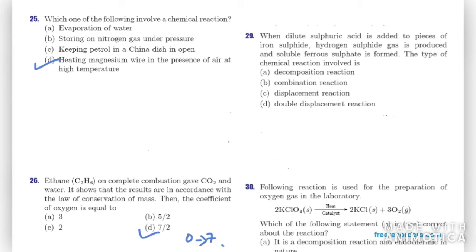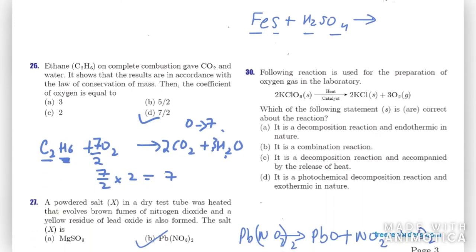Question twenty-nine: when dilute sulfuric acid is added to pieces of iron sulfide, hydrogen sulfide gas is produced and soluble ferrous sulfate is formed. We have FeS + H2SO4. Since both are compounds exchanging ions, this is a double displacement reaction.